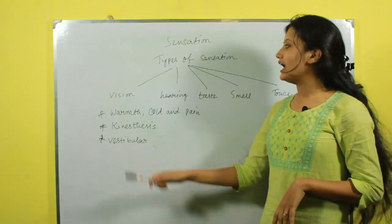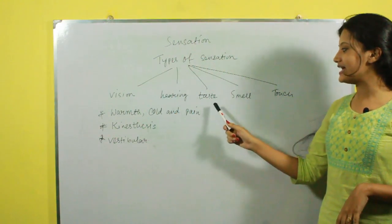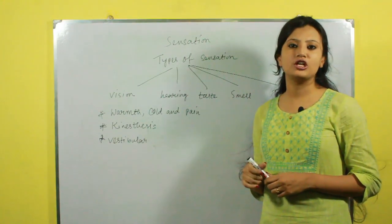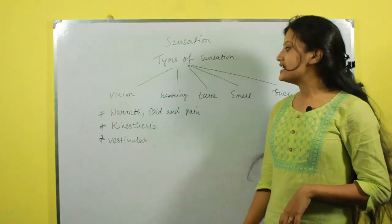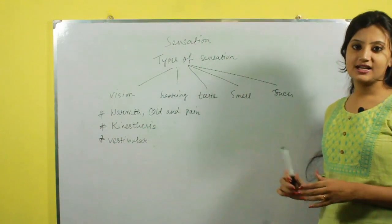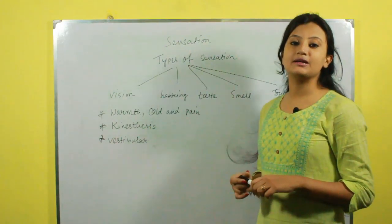Along with vision, hearing, taste, smell and touch, human senses are closer to 10 than 5. Skin contains warmth, cold and pain senses.